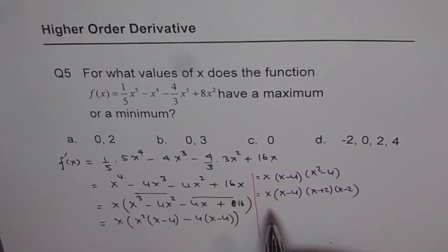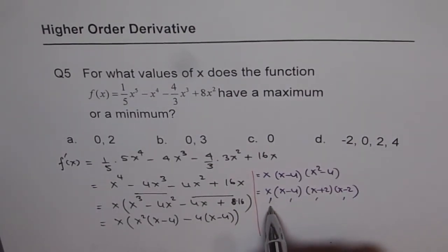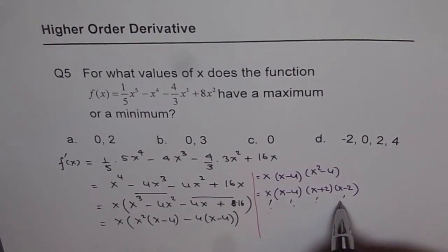So that gives us four roots, four critical numbers. The numbers are x = 0, 4, -2, and 2. So clearly the choice is D.